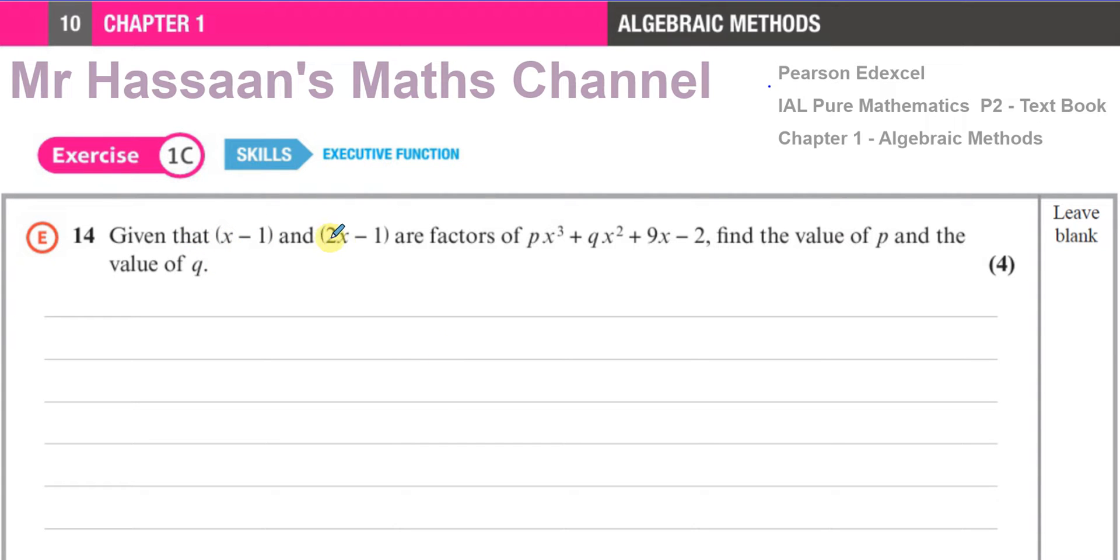It says, given that x-1 and 2x-1 are factors of this expression px³ + qx² + 9x - 2, find the value of p and the value of q. If they are factors of this expression, then when you divide this expression by these factors, the remainder is 0.